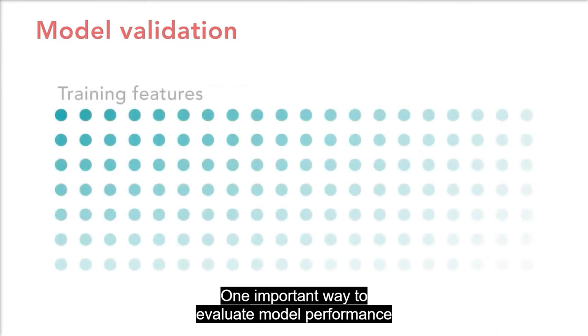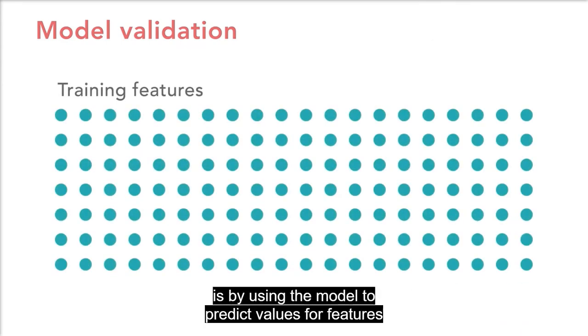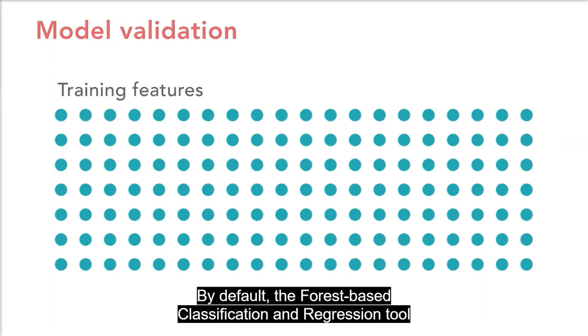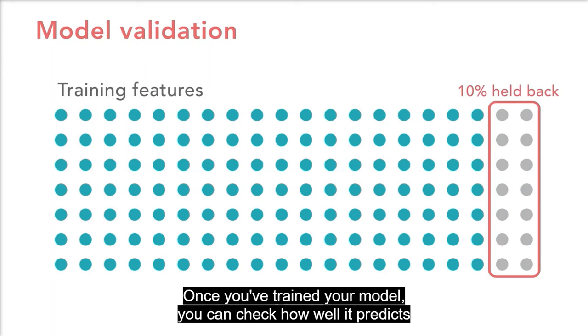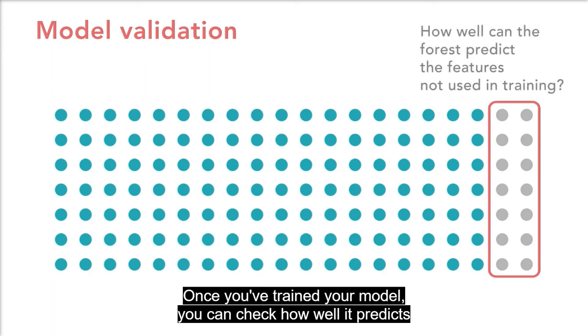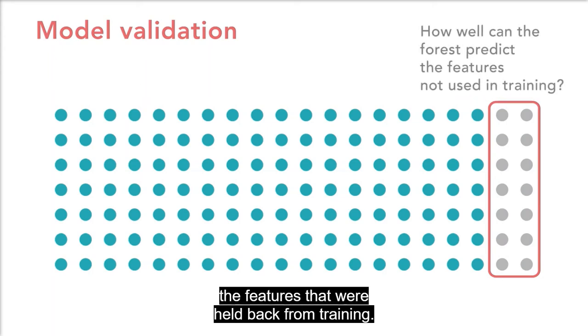One important way to evaluate model performance is by using the model to predict values for features that were not included in the training dataset. By default, the forest-based classification and regression tool holds back 10% of the data for validation. Once you've trained your model, you can check how well it predicts the features that were held back from training.